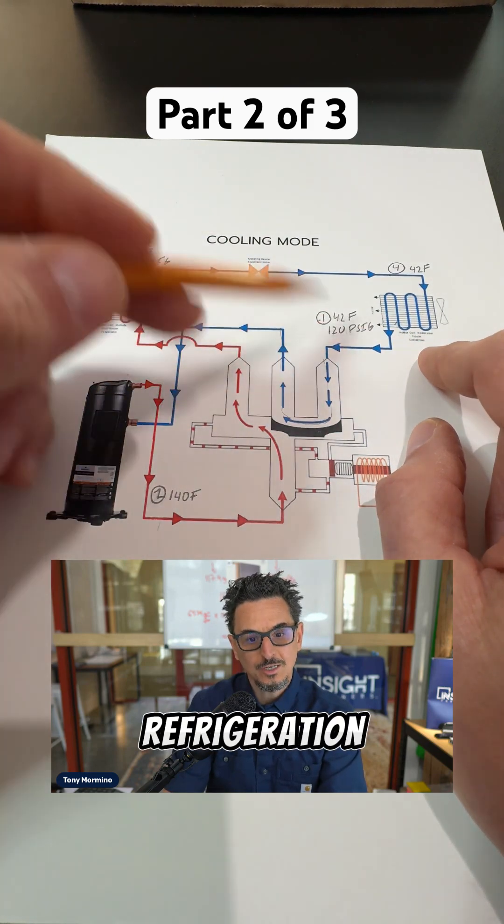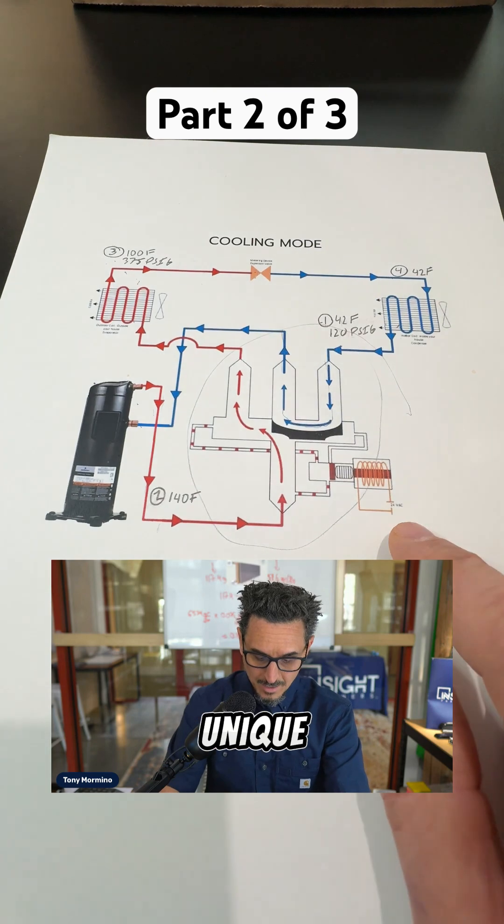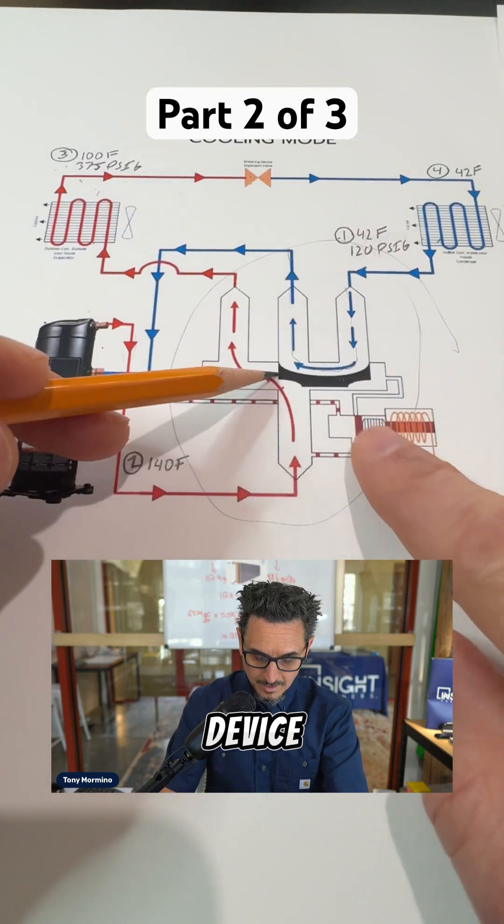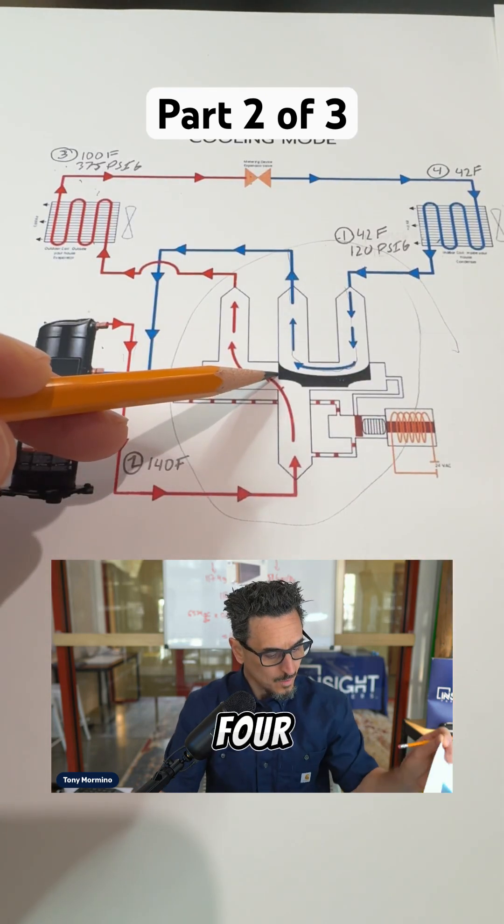That's a typical refrigeration cycle. What makes a heat pump unique is this device right here, which is called a four-way reversing valve.